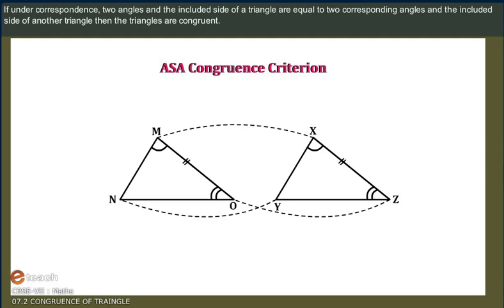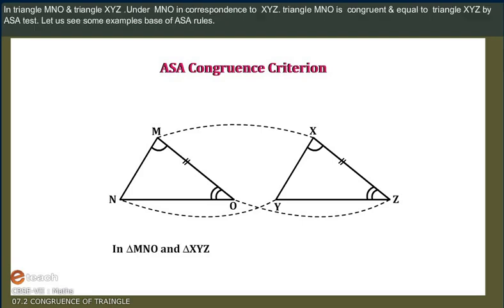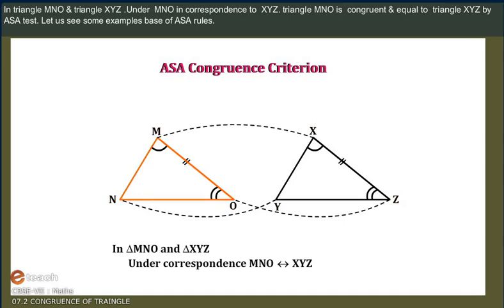Angle-Side-Angle Congruence Criterion: If under a correspondence, two angles and the included side of a triangle are equal to two corresponding angles and the included side of another triangle, then the triangles are congruent. In Triangle MNO and Triangle XYZ, under correspondence MNO to XYZ, Triangle MNO is congruent to Triangle XYZ by the Angle-Side-Angle test. Let us see some examples based on the Angle-Side-Angle rule.